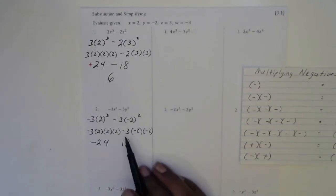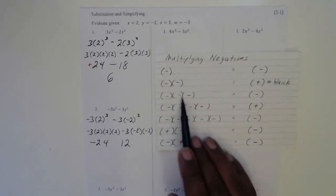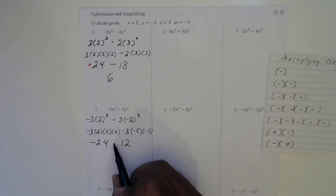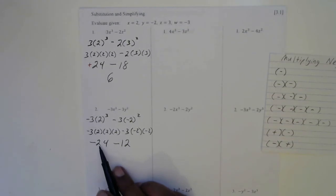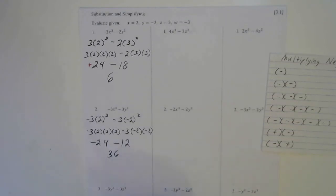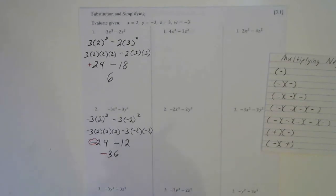Now here we're multiplying three negatives together. The rule is when you multiply three negatives, you'll have a negative number. So these are the same signs — same signs do add. Negative 24 and negative 12 add up to 36. And the bigger sign always wins, so the 24 is the bigger, so we're going to use its negative to give us a negative 36.